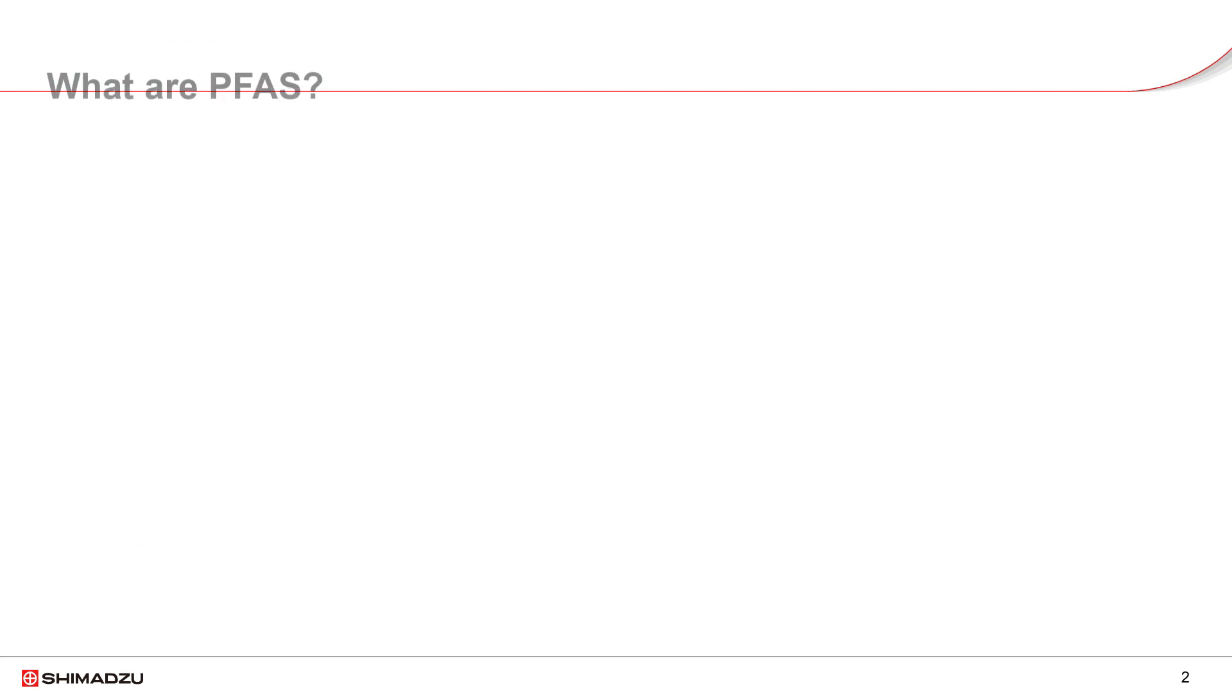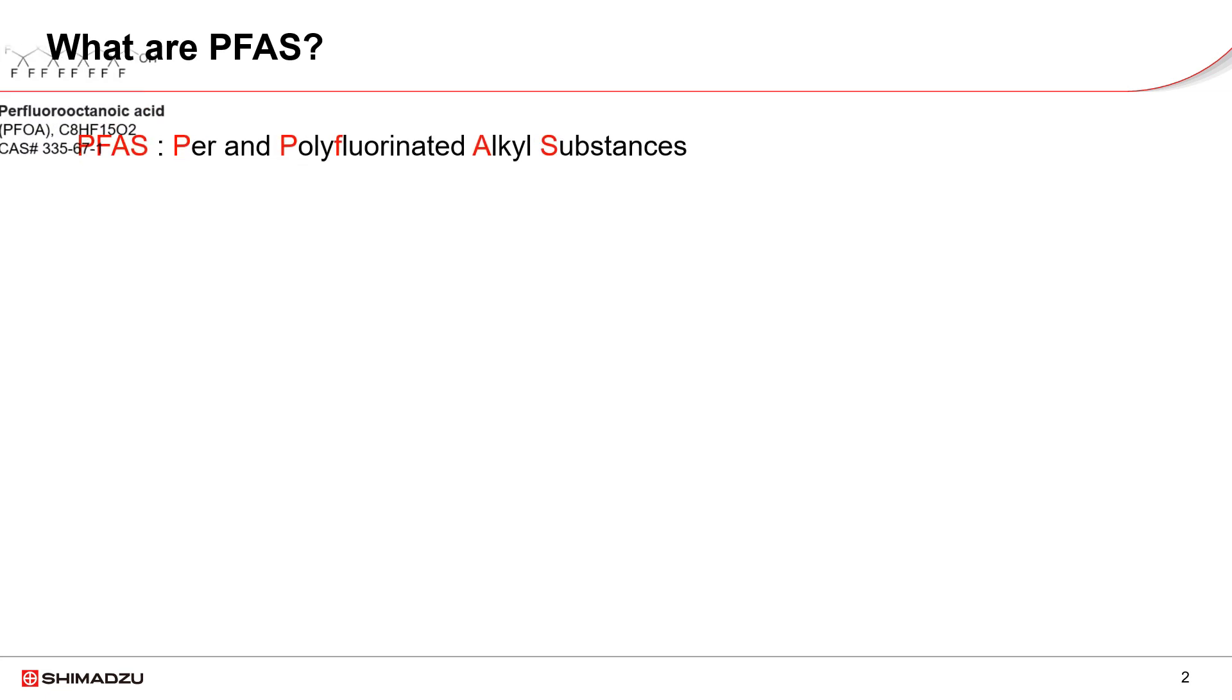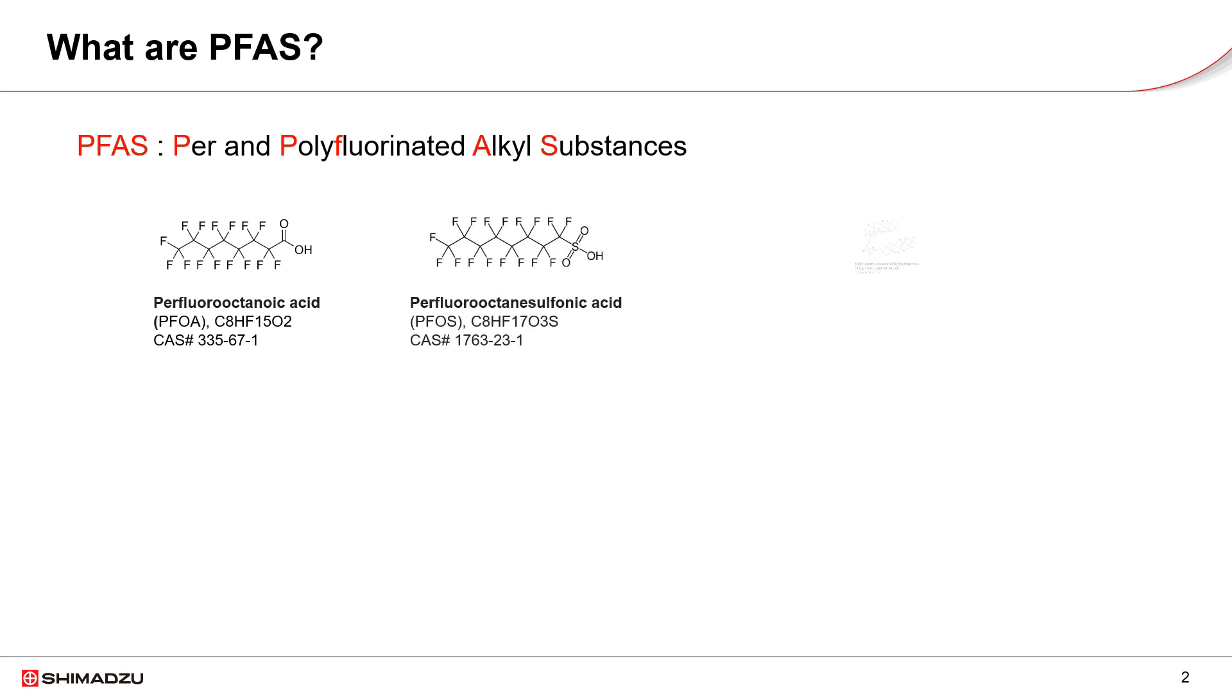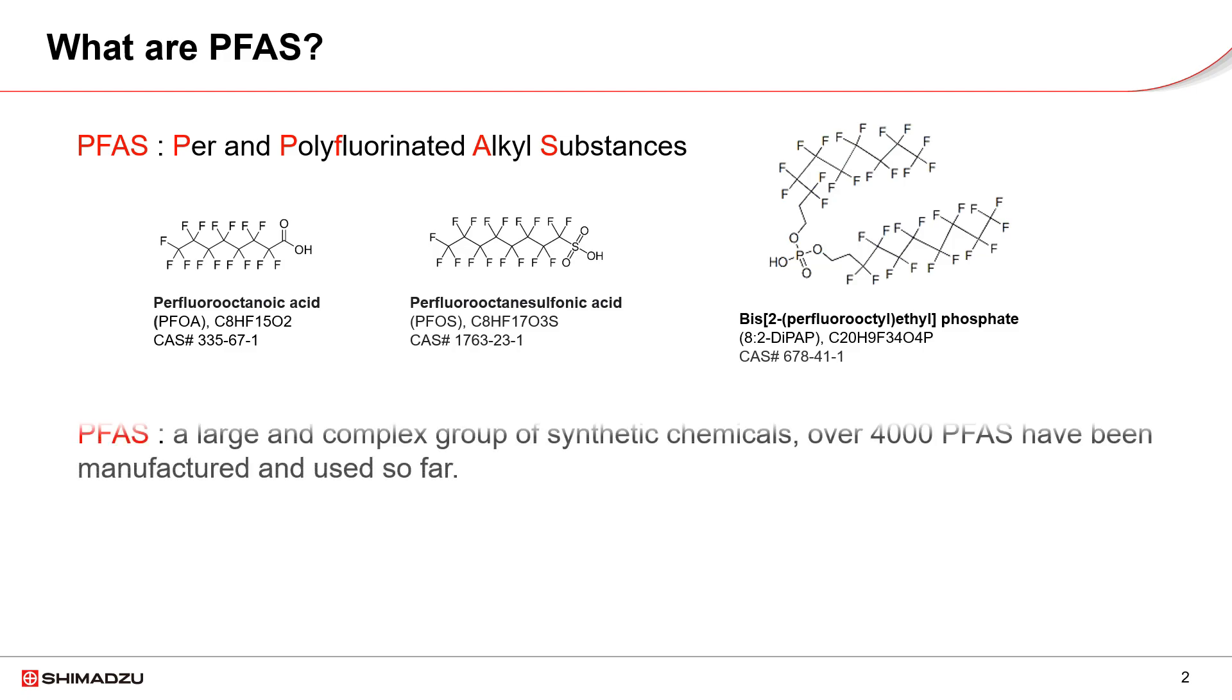What are PFAS? PFAS is an abbreviated name for per- and polyfluorinated alkyl substances. Simply, PFAS are organic compounds with hydrogen atoms on the carbon skeleton replaced fully or partially with fluorine atoms. PFAS represents a big group of compounds with diverse structures, sizes and properties. It is estimated that over 4,000 PFAS have been manufactured and used since the 1940s.